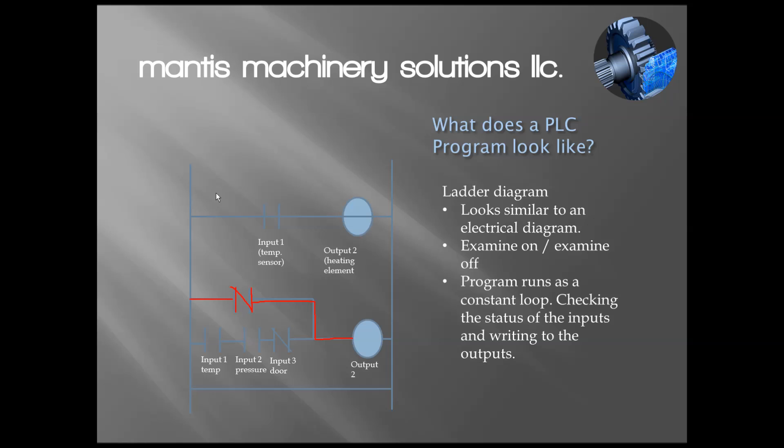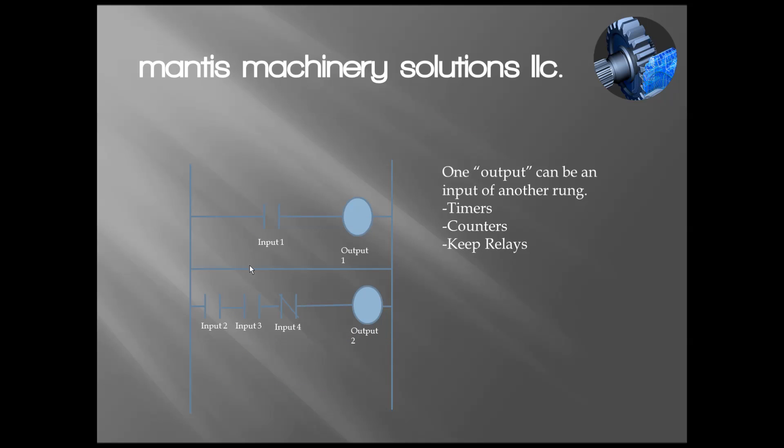This was ladder logic. There's one more thing I'd like to mention - timers, counters, and keep relays. Basically they are software. For example, you could have a timer that is not a physical device, it's built into the software, into the PLC. Its job is to time. Say output number three was some sort of a lubrication pump. I have input number five, maybe that's a push button switch that tells it we need to lubricate the axis. We know the pump, if it runs for 10 seconds, that's enough oil. I would set this timer in the software for 10 seconds, and then once it's expired, it opens up the path and the pump turns off.